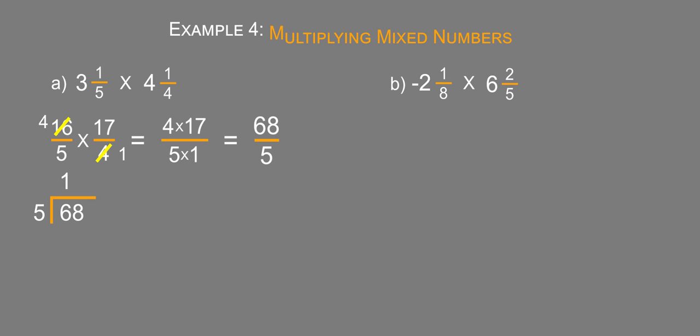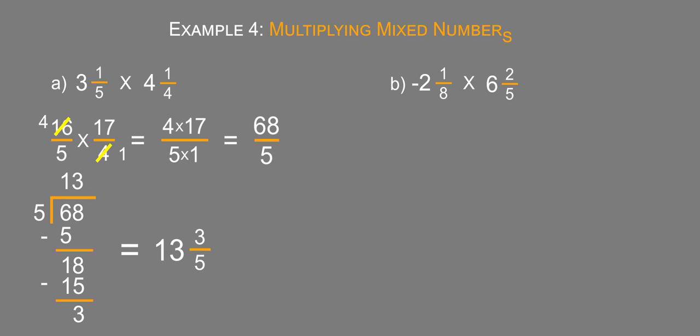Five goes into six one time. Six minus five is one. Bring down your eight. Five times three is 15. 18 minus 15 is three. And that's less than five. So the remainder we put over what we're dividing by. So this equals 13 and 3/5.